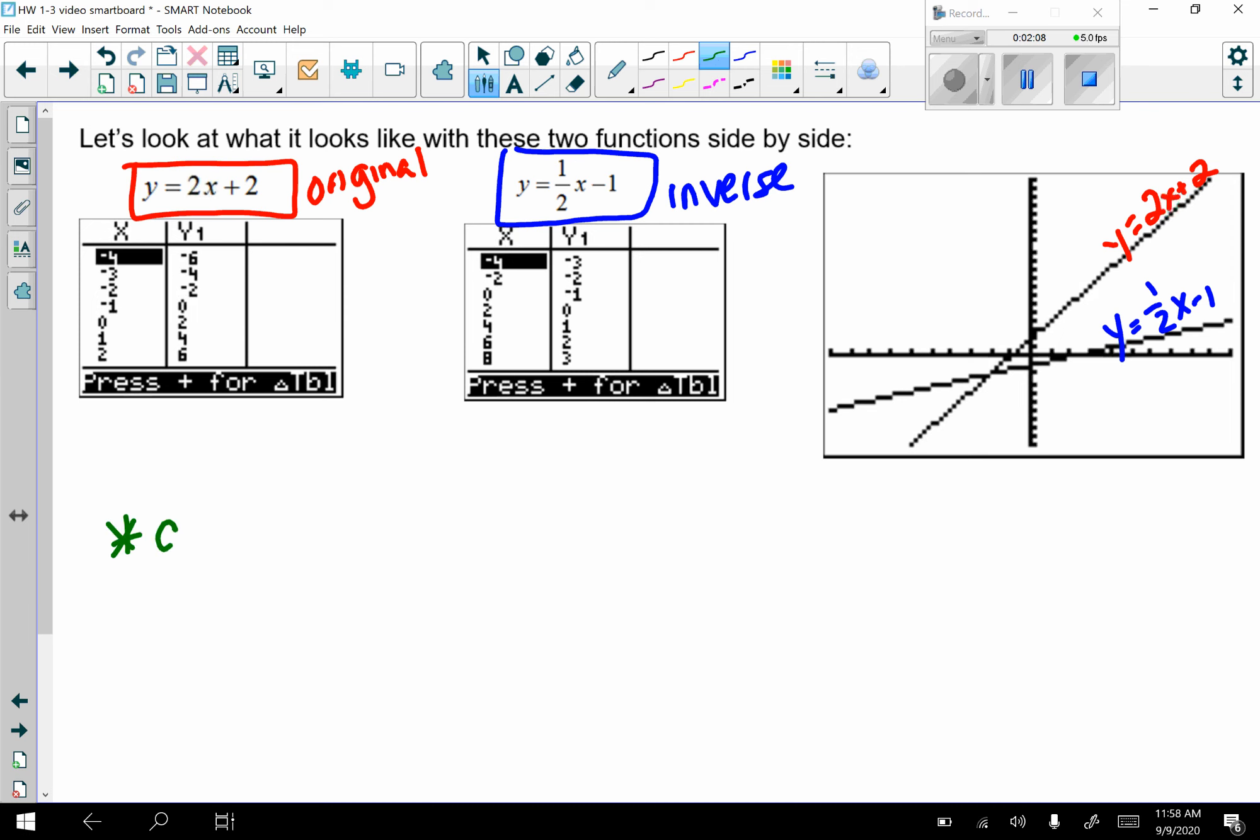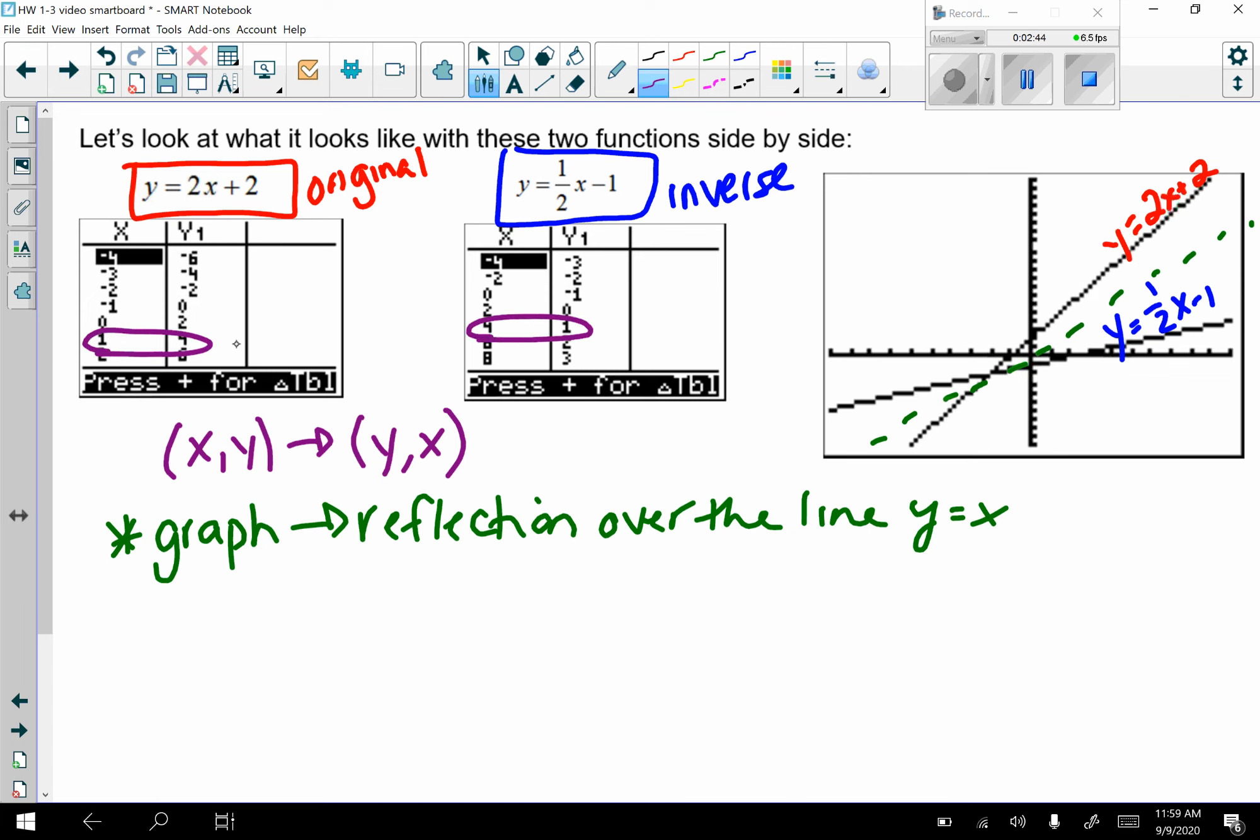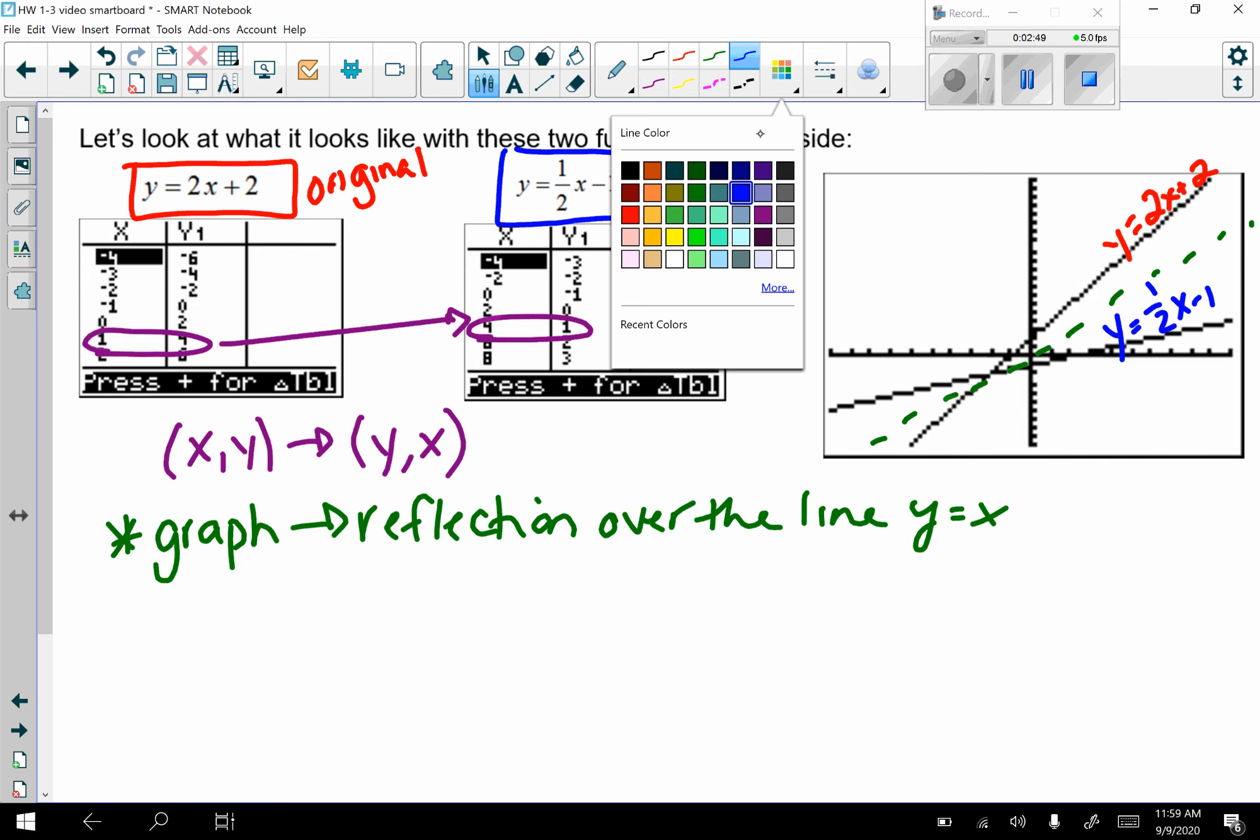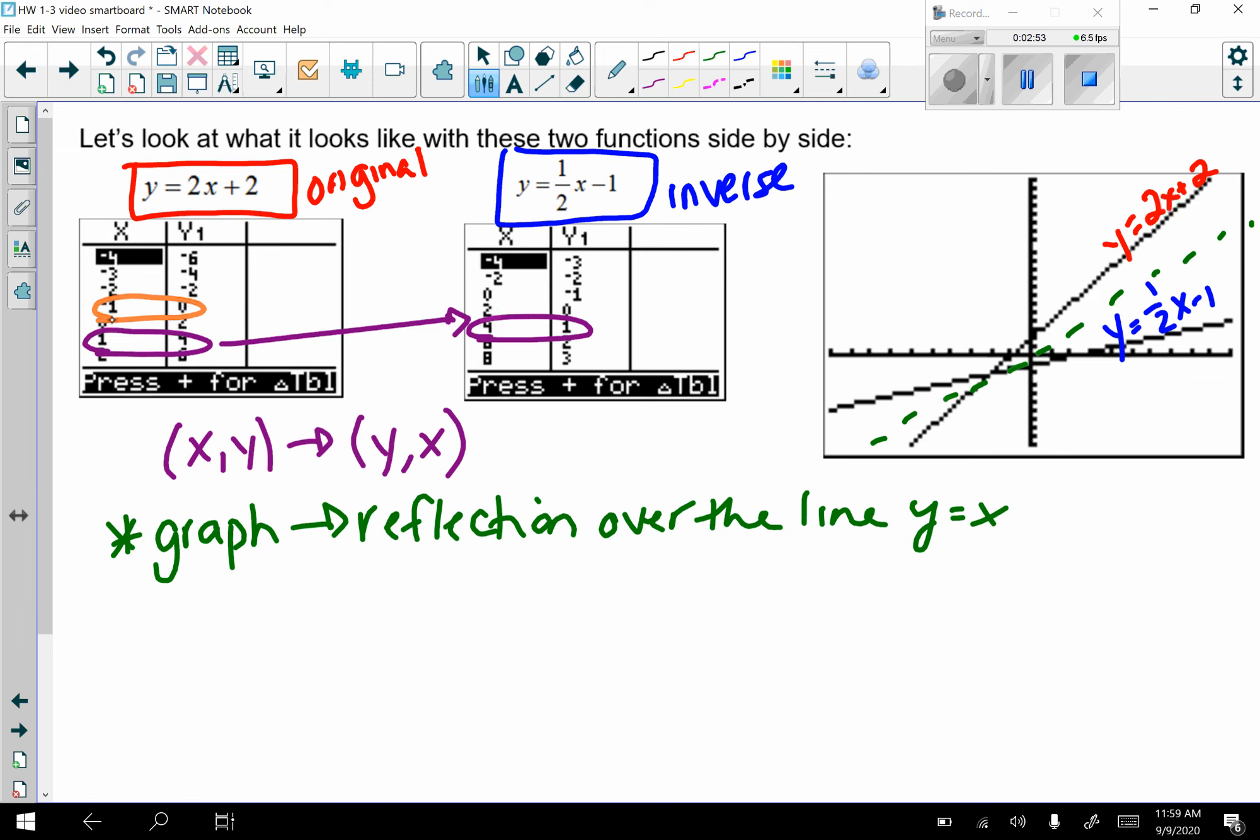Some things you should notice graphically. It's a reflection over the line y equals x. In the table what you should notice is that coordinate pairs, x's and y's, are switched. So for example the point (1, 4) here is now the point (4, 1) there. The point negative 1, 0 is the point 0, 1 here. So coordinate pairs are switched because that's the definition of an inverse. My x's and y's are switched. My domain and range is switched.